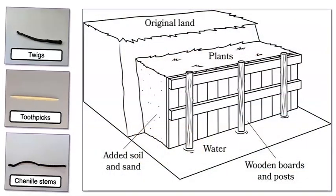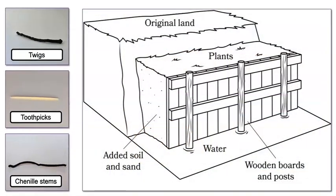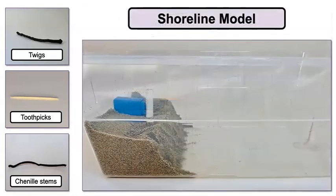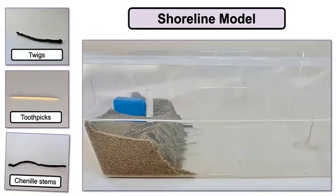Well, the twigs, toothpicks, and Chenille stems are straight, like the wooden posts and the wooden fence in the shoreline protection system. Could they help block the water? How could we use the twigs, toothpicks, or Chenille stems to help block the water?